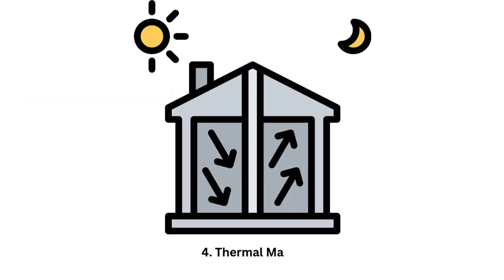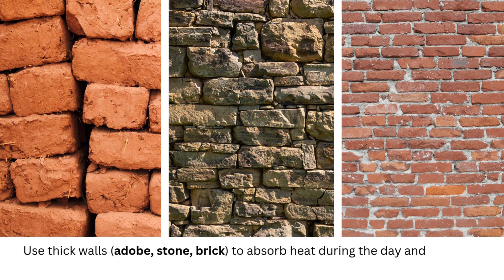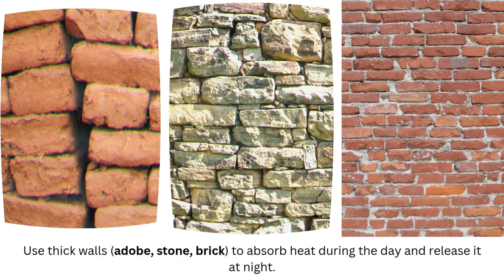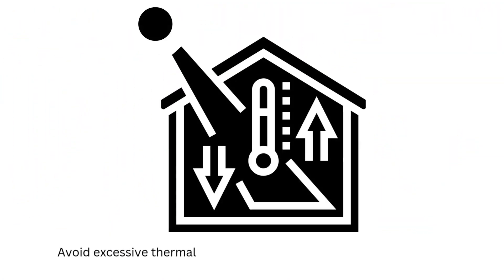4. Thermal mass. Use thick walls — adobe, stone, brick — to absorb heat during the day and release it at night. Avoid excessive thermal mass in humid regions where nights stay warm.